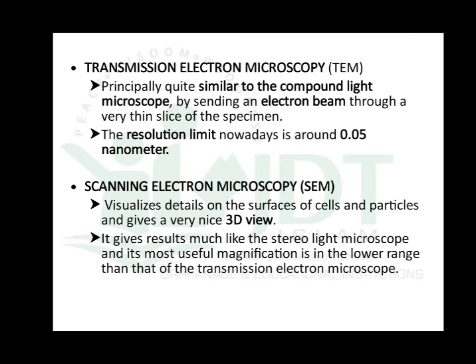The main difference between TEM and SEM: the working principle of the transmission electron microscope is similar to the compound light microscope — instead of a light source we use an electron beam, and instead of lenses we use magnetic lenses, with a resolution of 0.05 nanometer. In scanning electron microscopy, an electron beam is directed at a specimen and from that specimen there is a secondary emission of electrons; that secondary beam is detected by a detector and produces a 3D view.